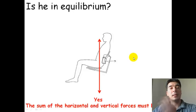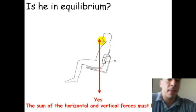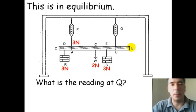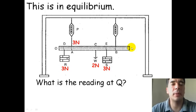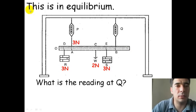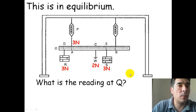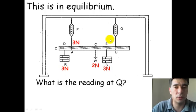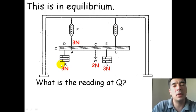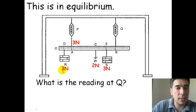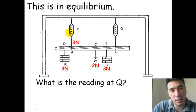Now let's have a look at how we can apply this to solve some problems. Here's a question about equilibrium. We're being told that this is in equilibrium, this situation. So we should be able to, from our knowledge of the word equilibrium, find out what the force or the reading at Q will be. These are newton meters. So, the forces acting down are this 3 newton, 2 newton, and 3 newton. And there's this force acting up, P, which is 3 newtons, and Q.